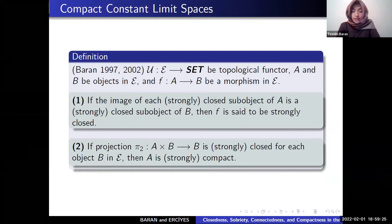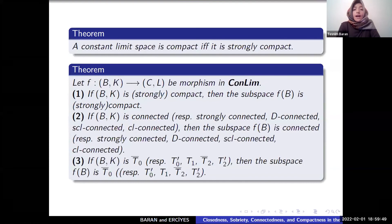A compact constant limit space. U is a topological functor. If the image of each closed sub-object of E is a closed sub-object of B, then F is said to be strongly closed. If projection maps are closed for each object B in A, then A is compact. And we proved constant limit space is compact if and only if it is strongly compact.